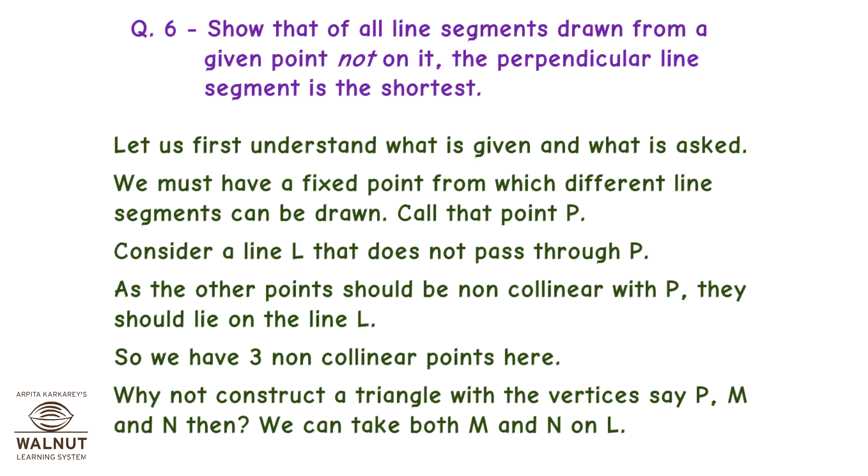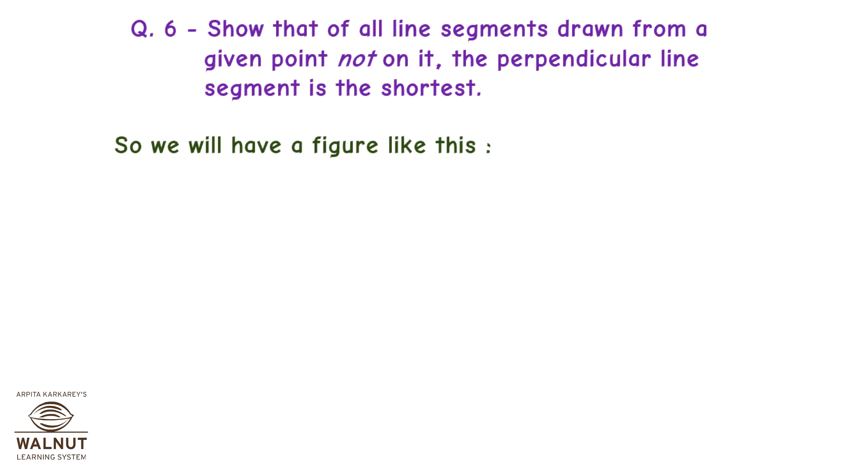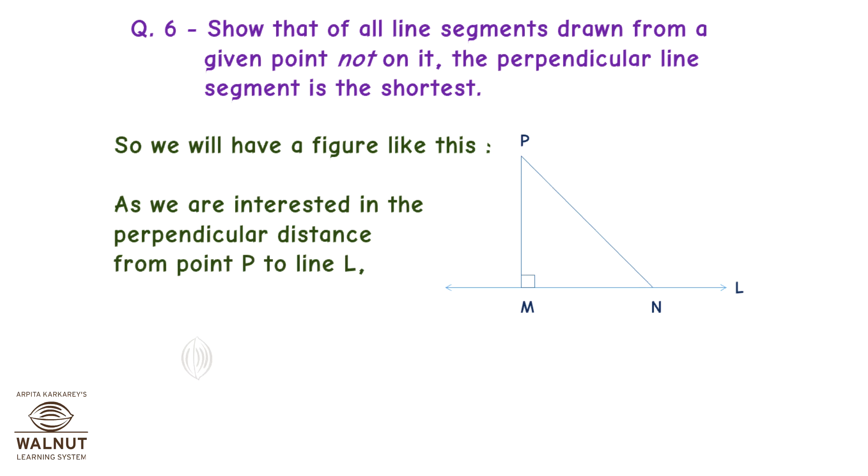So, we have three non-collinear points here. Why not construct a triangle with the vertices, say, P, M and N then? We can take both M and N on L. So, we will have a figure like this. As we are interested in the perpendicular distance from point P to line L, drop PM perpendicular to L. Angle M is equal to 90 degrees.